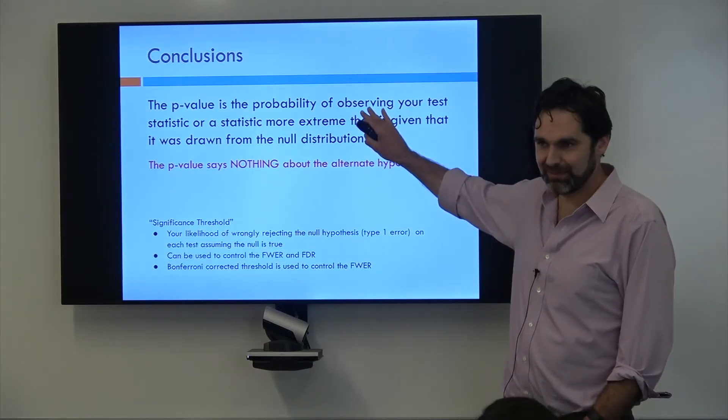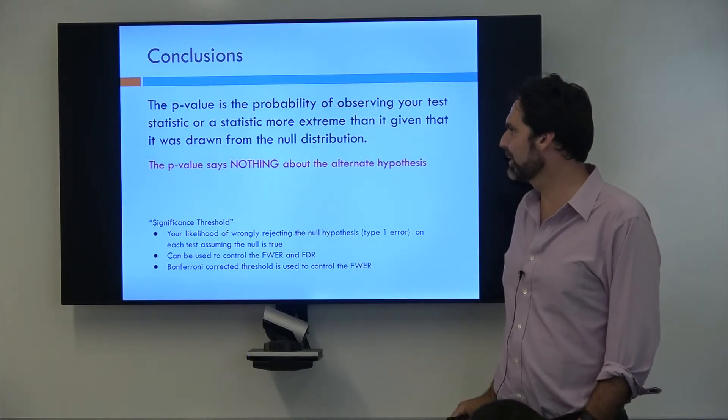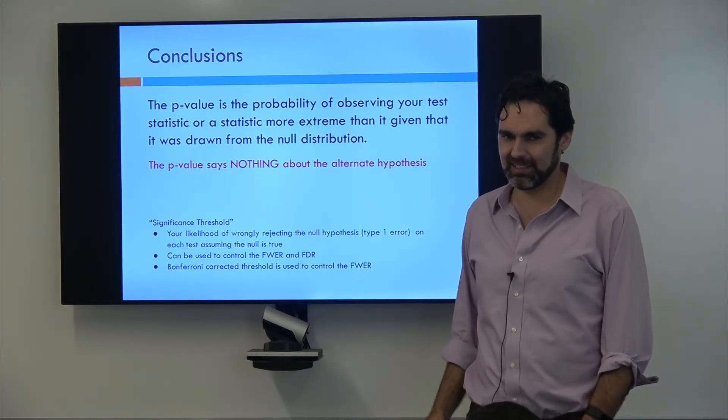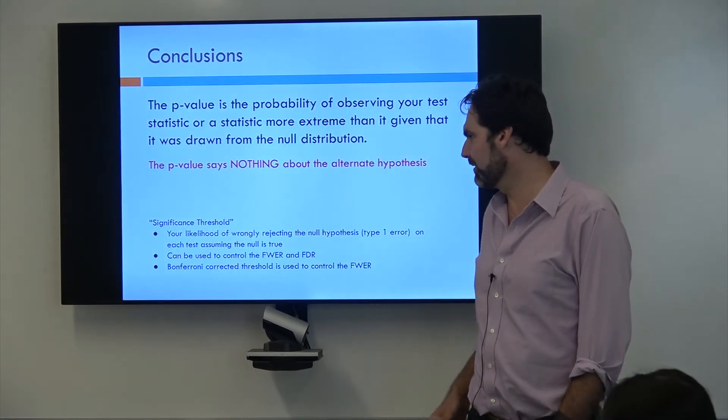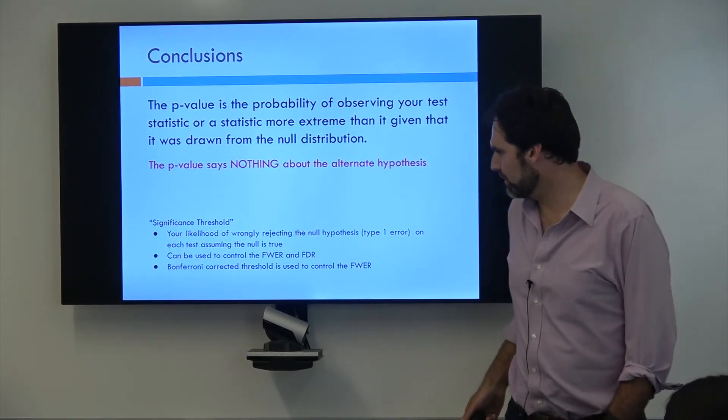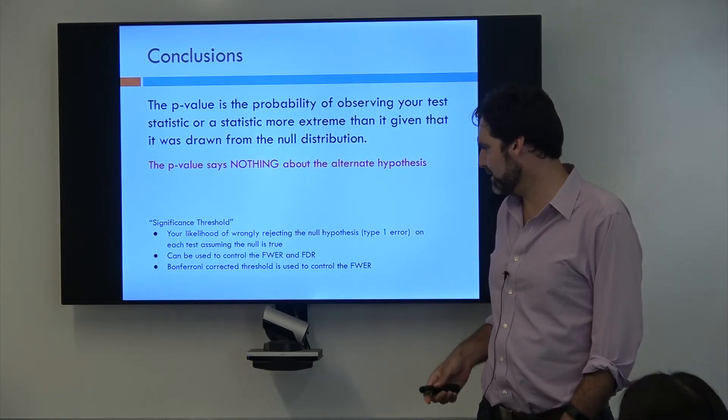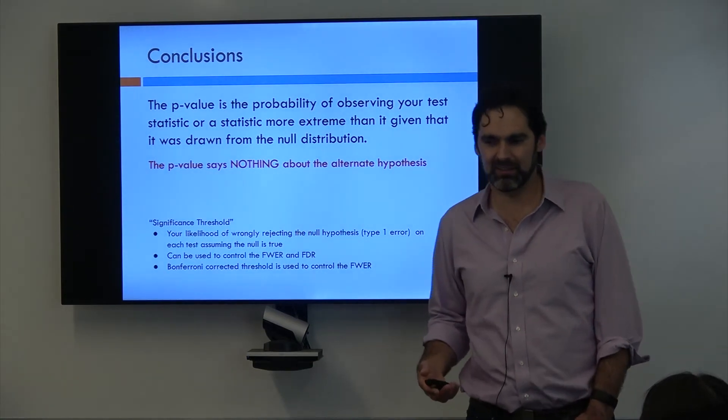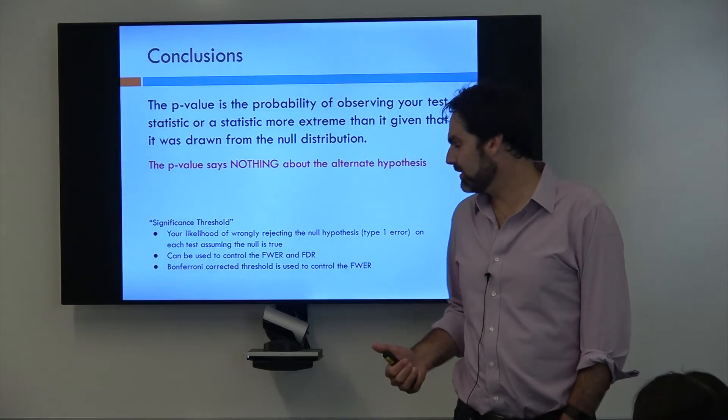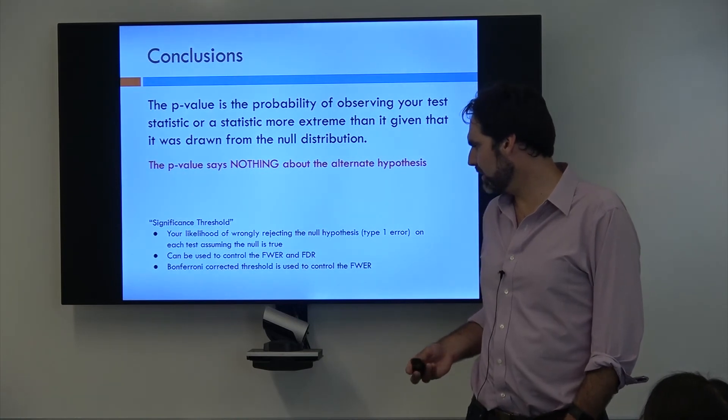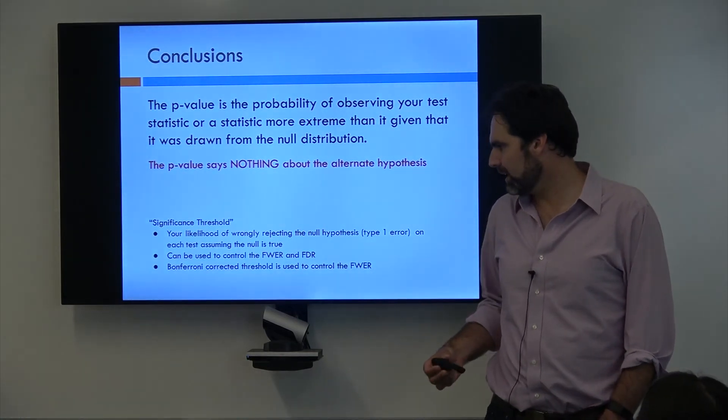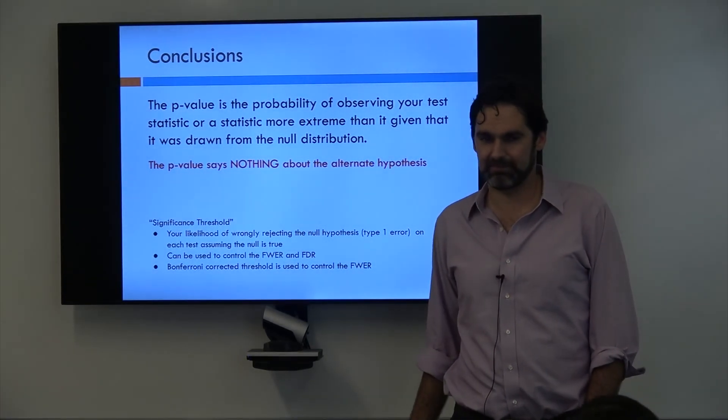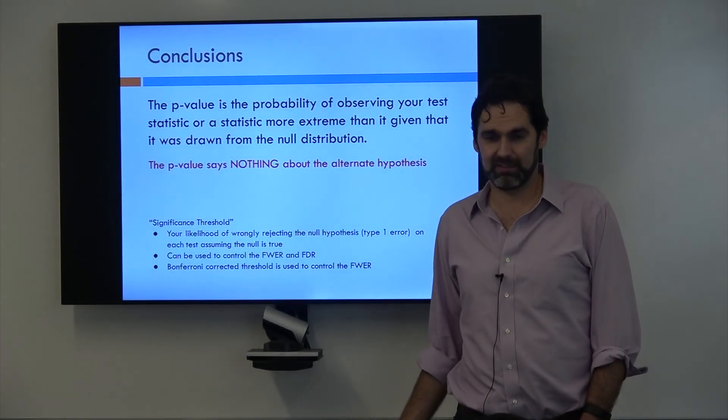So in conclusion, you should memorize what a p-value is for a future job interview. The p-value says nothing about the alternative. All it says is the probability of your data under the null. And your significance threshold, it's your likelihood of wrongly rejecting the null hypothesis or making a type 1 error on each test assuming that the null is true. And you can use it to control family-wise error rate and the false discovery rate. And using the Bonferroni corrected threshold, you can use that to control the family-wise error rate. And that's our module. Are there any questions?